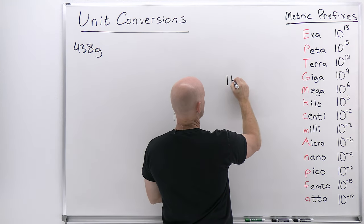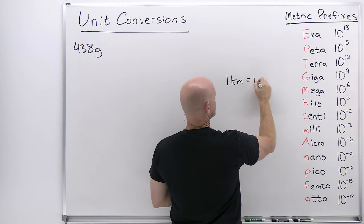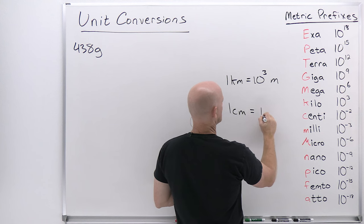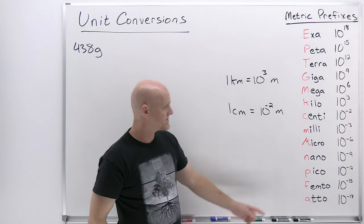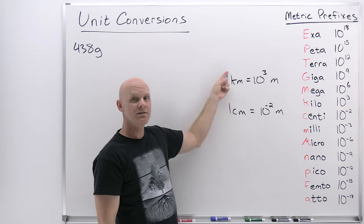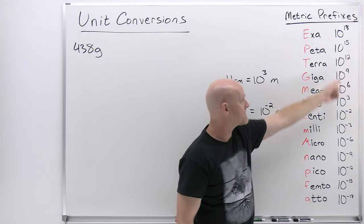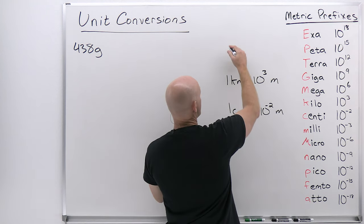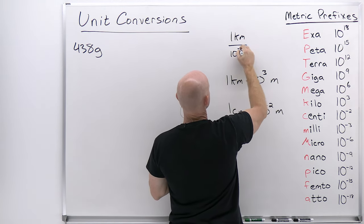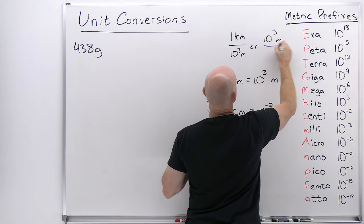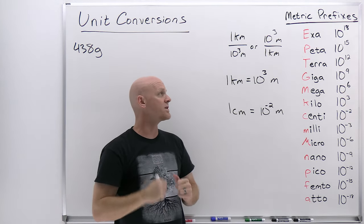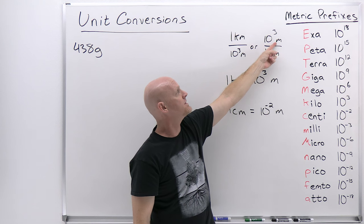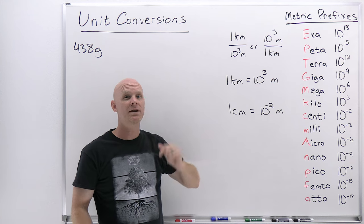If we take one kilometer, kilo means 10 to the third, so that equals 10 to the third meters. One centimeter equals 10 to the negative 2 meters. As long as you have one of whatever unit has the prefix, it equals 10 to some power of the base unit. In a proper conversion, the numerator and denominator are equal but expressed in different units. Which one is the numerator or denominator depends on which direction you're converting.